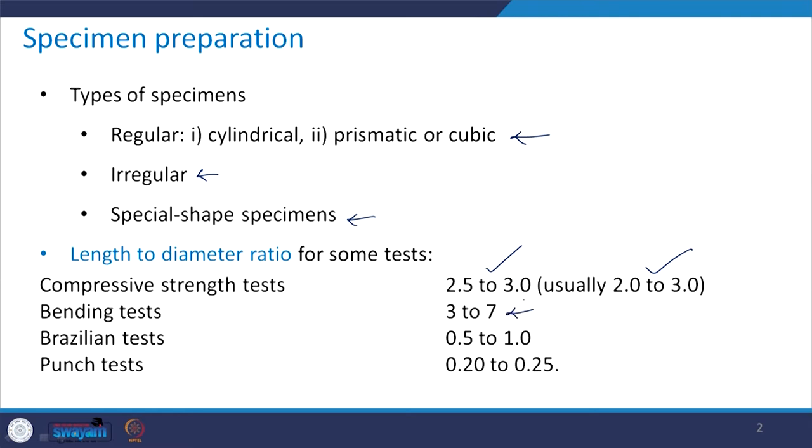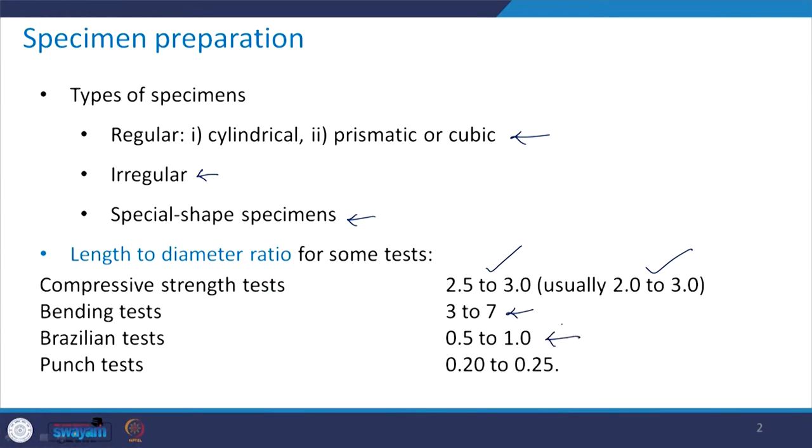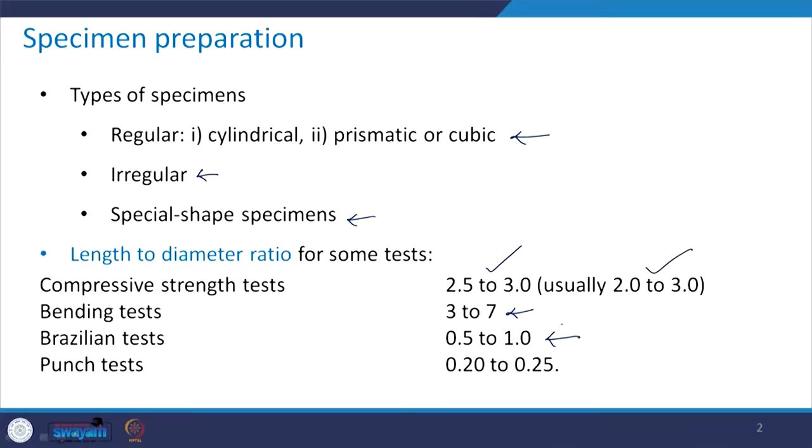For the bending test, the L/D ratio should be 3 to 7, because bending has to take place, so the length dimension is kept larger compared to the width direction. For the Brazilian test, which is done to obtain tensile strength, the L/D ratio is kept as 0.5 to 1. For the punch test, it can be 0.25 to 0.2. These are the ISRM guidelines for L/D ratio for some salient tests, and one needs to keep this in mind while preparing the specimen.